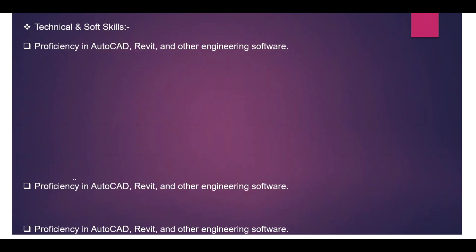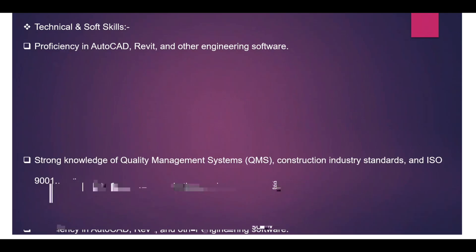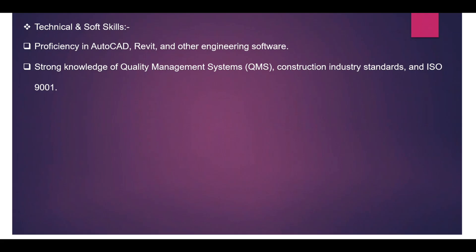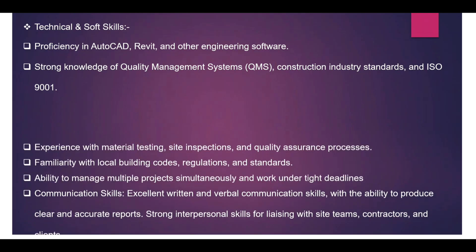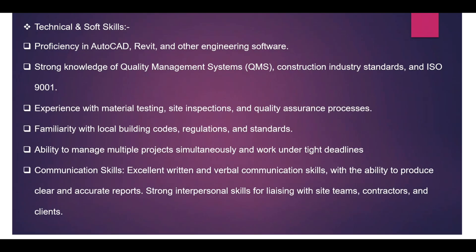In addition to these responsibilities, a quality control engineer must have certain technical and soft skills. Technical skills include proficiency in AutoCAD, Revit, and other engineering software to verify drawings and documents against contract requirements, strong knowledge of the Quality Management System (QMS), construction industry standards, ISO 9001, experience in material testing, site inspection, and quality assurance processes, and familiarity with local building codes, regulations, and standards.